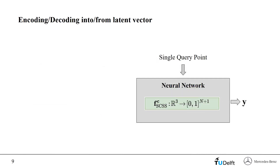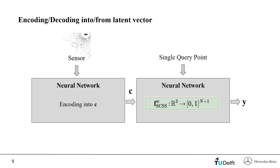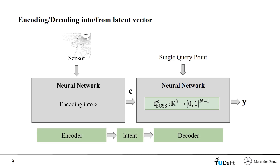We are going to use a neural network which represents the scene segmentation function, but this function needs to be dependent on the actual sensor input data. The function is parameterized by a latent vector c. You can either look at the output function as parameterized by c, or as a function of two inputs: the query coordinate as first input and the latent code as a second input. This latent vector c is generated by a second neural network from the actual sensor input data. Both networks combined create an encoder-decoder structure.